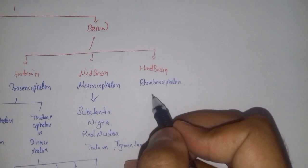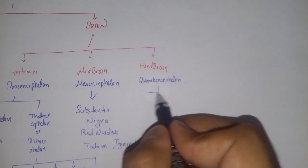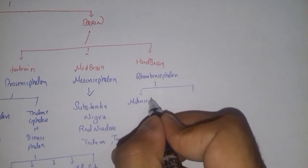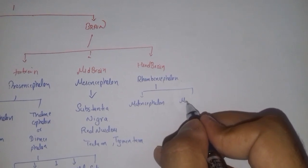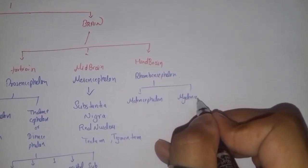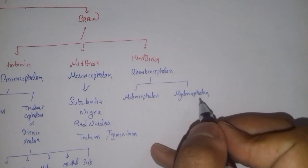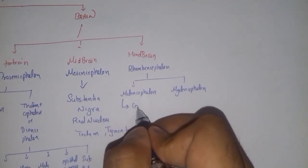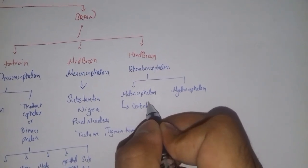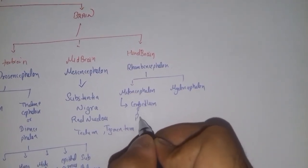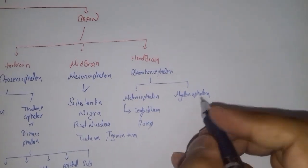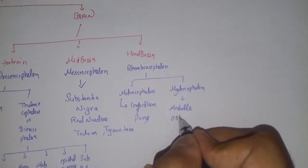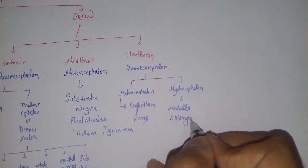The hindbrain, which is known as the rhombencephalon, is divided into two parts: the metencephalon and the myelencephalon. The metencephalon later results in the formation of the cerebellum and pons, whereas the myelencephalon results in the formation of the medulla oblongata.